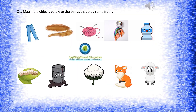Now for the exercises. Question 1: Match the objects below to the things they come from. We have pictures of materials used to make clothes — fox, cotton, petroleum, silkworm — and we match them to a trouser, a scarf, and a bottle. Solve it and send it to me.